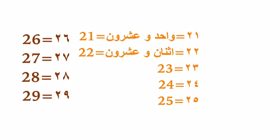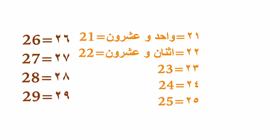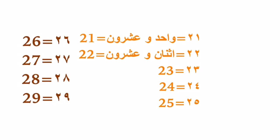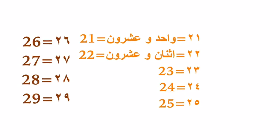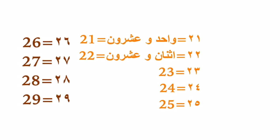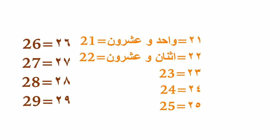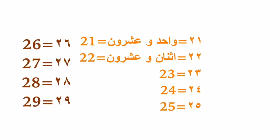This is the pattern we follow for twenty-one through twenty-nine, and also in the thirties, forties, fifties, sixties, seventies, eighties, and nineties. So if you know this pattern, the other numbers will be easy. Also notice we read the number from right to left — in twenty-three, for example, we read the three first, then the twenty: ثلاثة وعشرون.